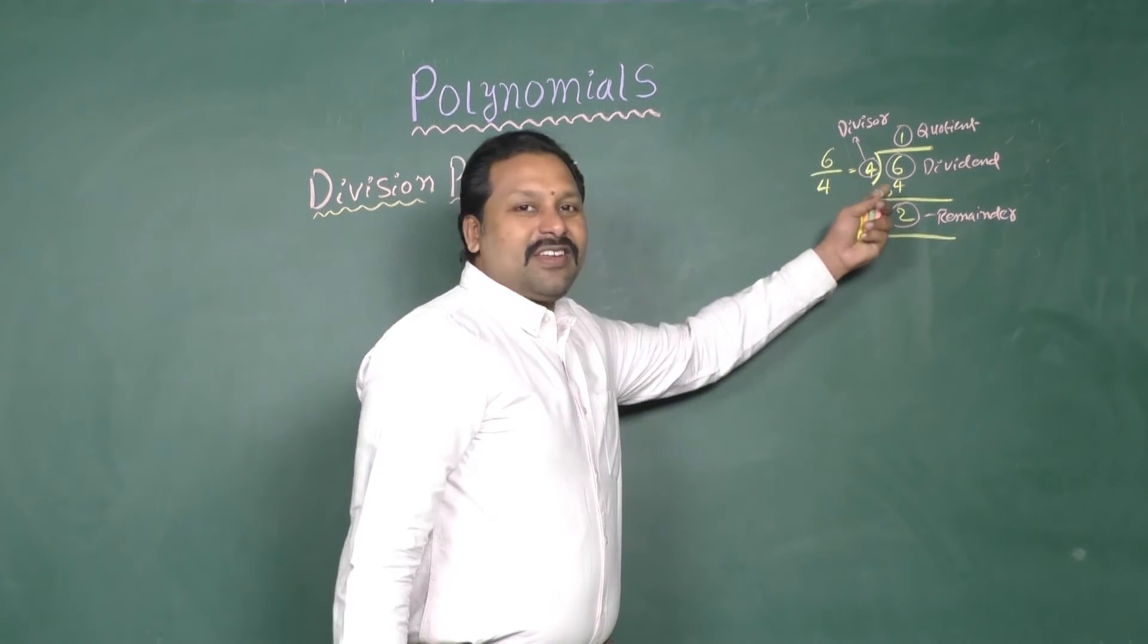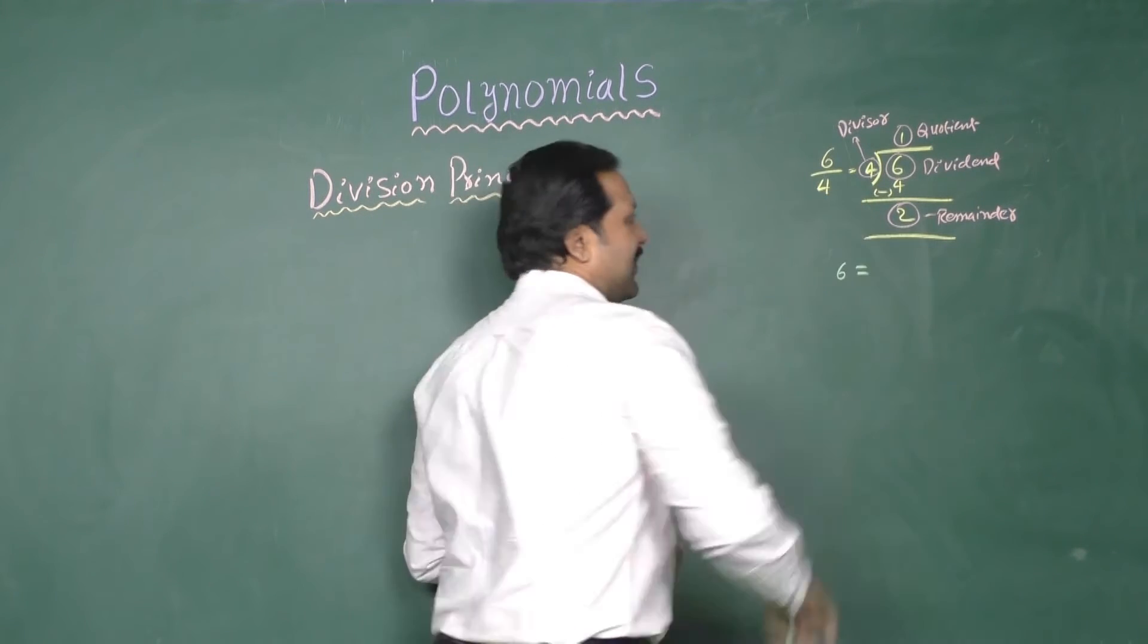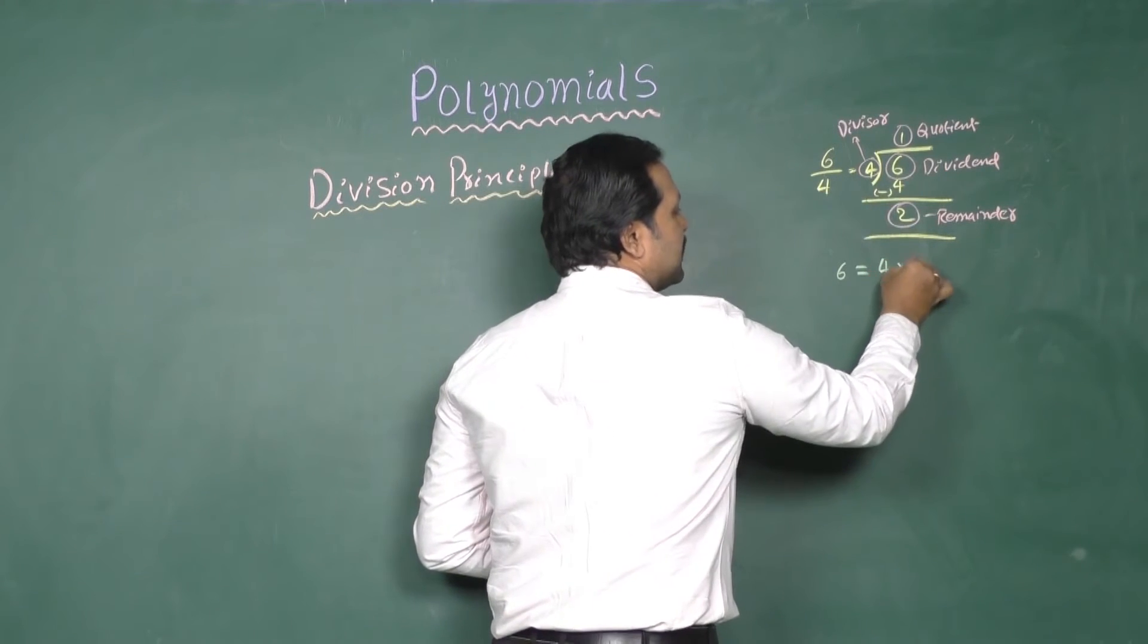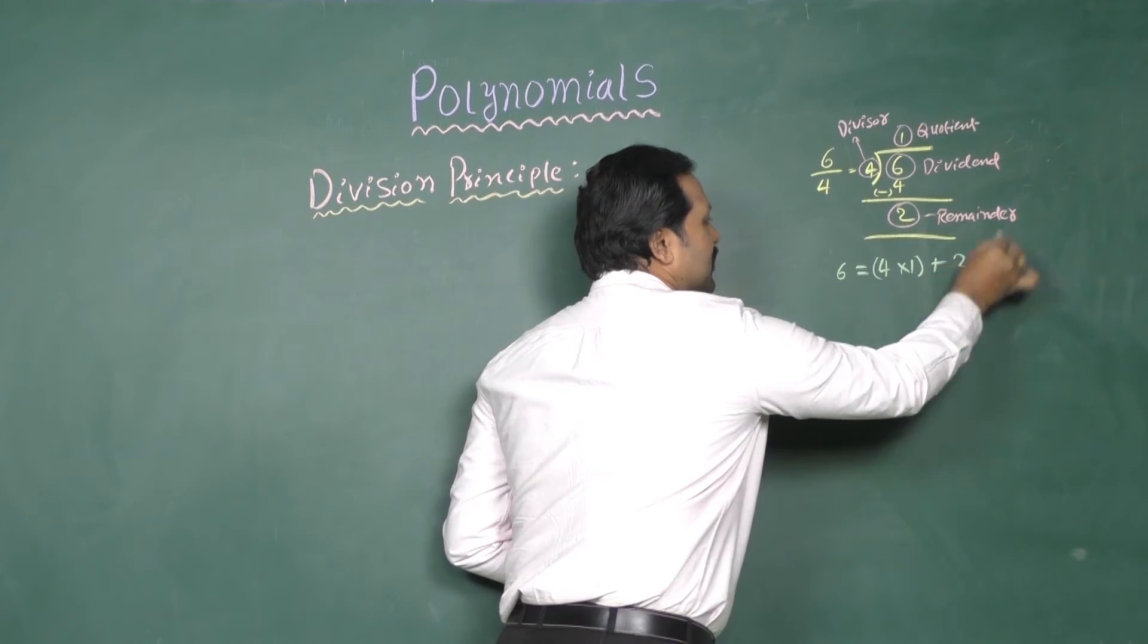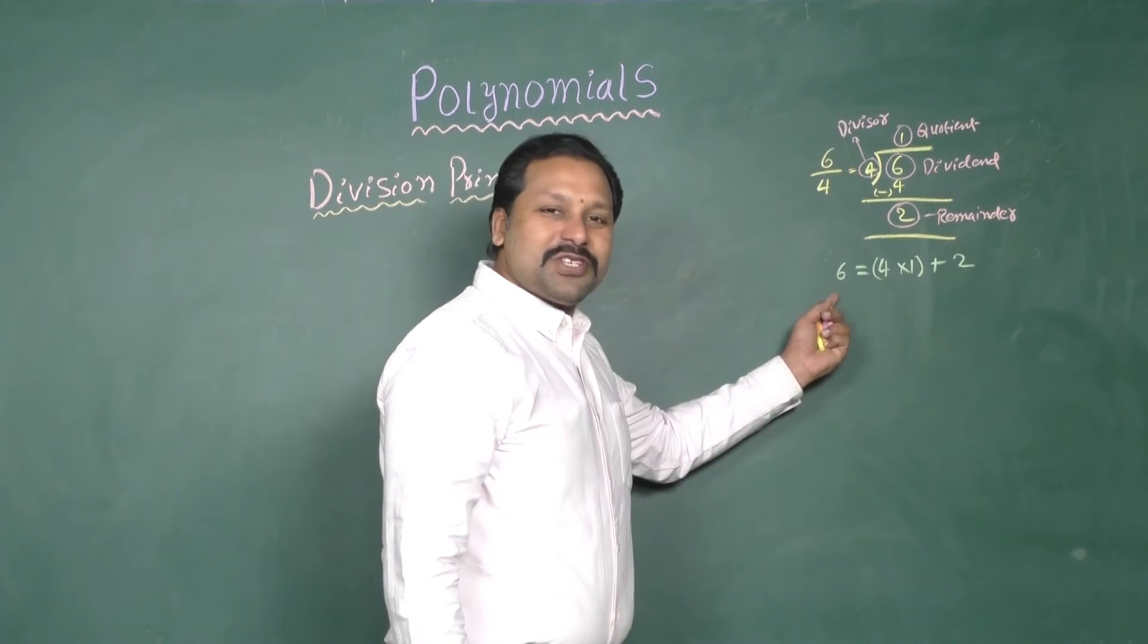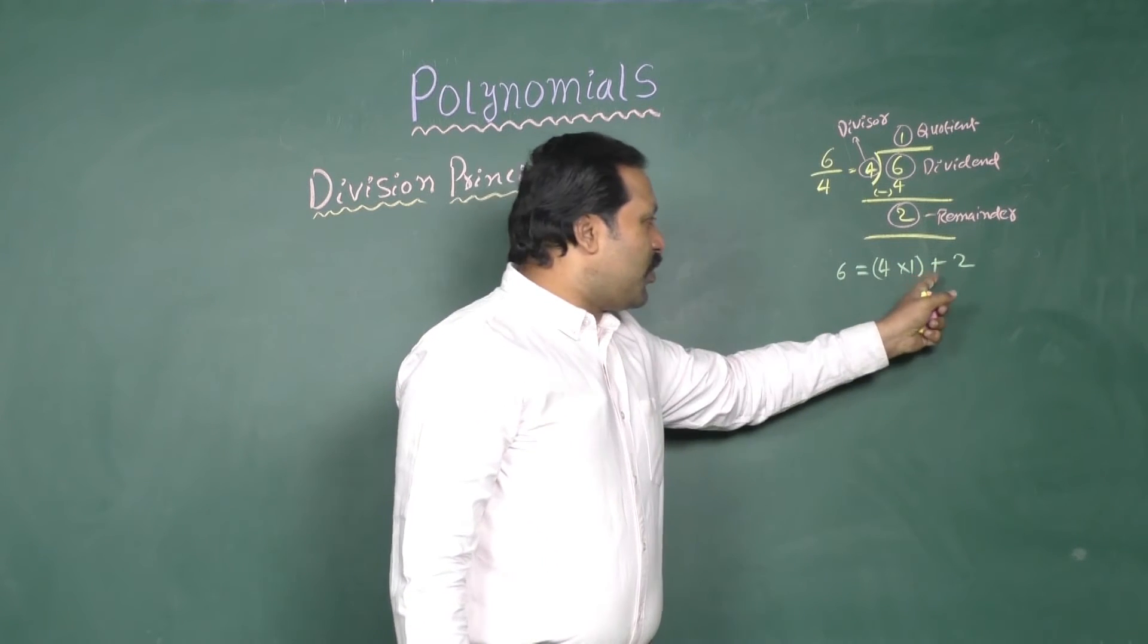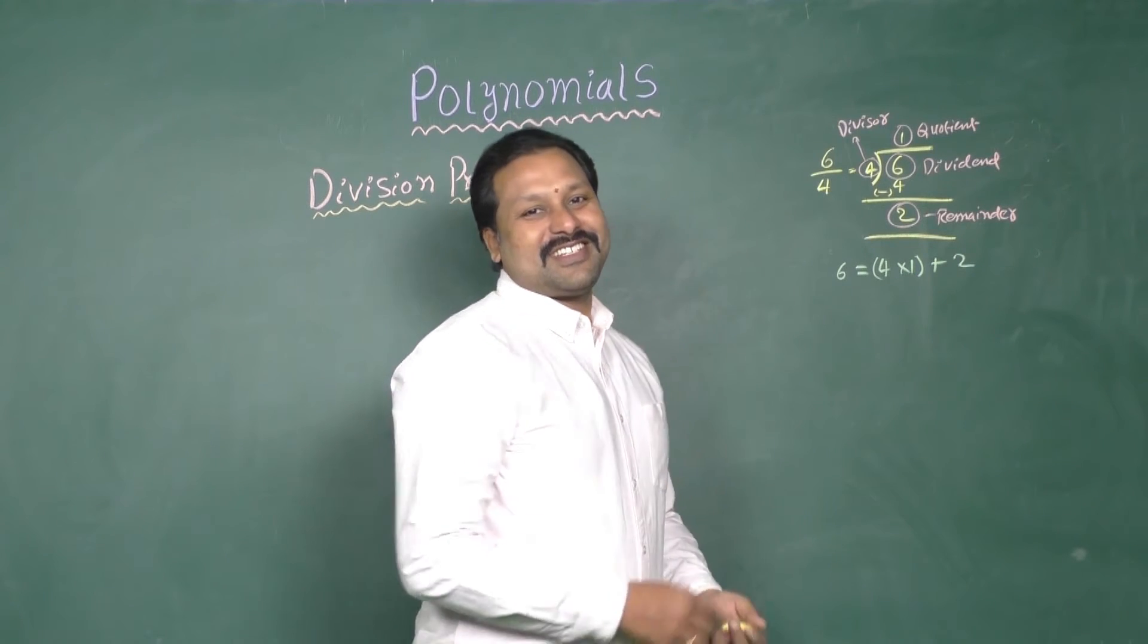Now, observe here. This 6 can be written as 6 = 4 × 1 + 2. So in LHS we have 6. In RHS, 4 × 1 going to be 4, 4 plus 2 gives 6. LHS equals RHS.